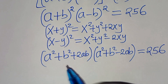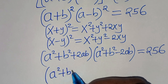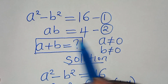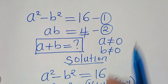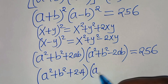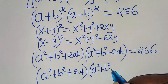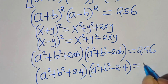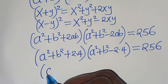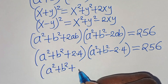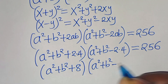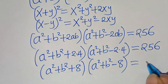The next step: we have a squared plus b squared plus 2 times a times b. Now a times b is what we have in equation 2, which is 4, so let's substitute 4. Here we have a squared plus b squared plus 2 times 4, and here we have a squared plus b squared minus 2 times 4, equal to 256.